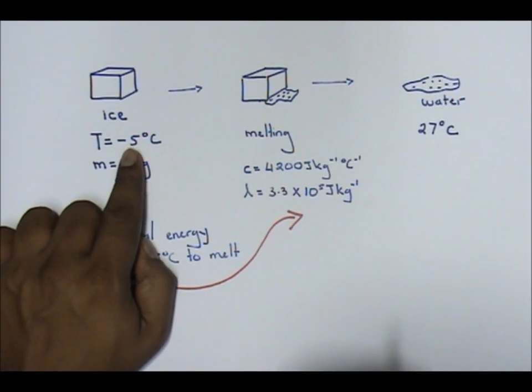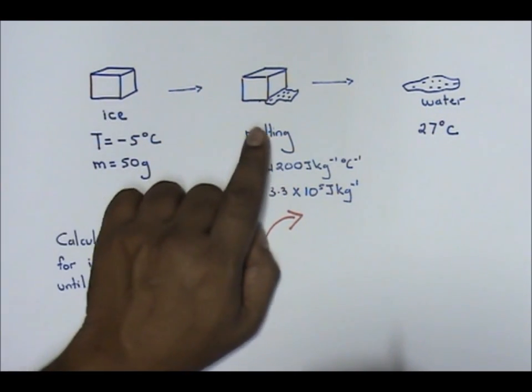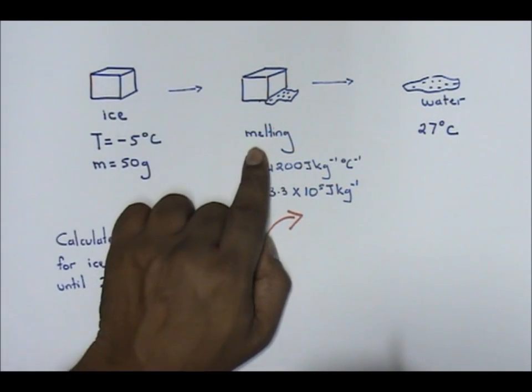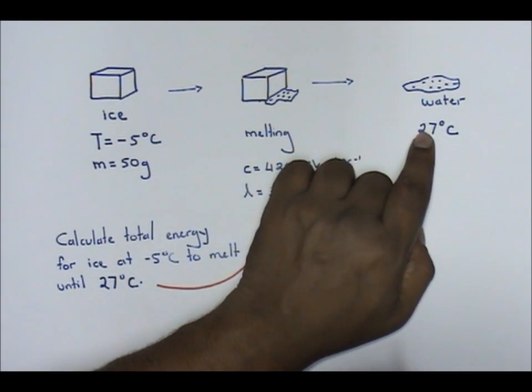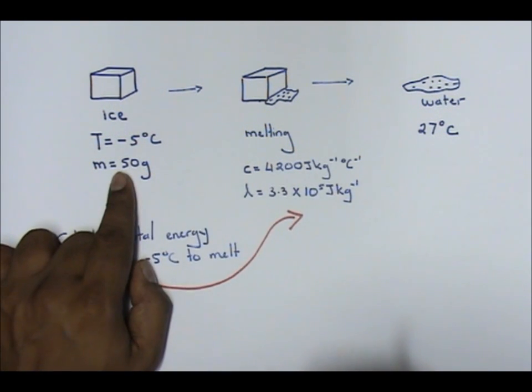Given to you: temperature negative 5 degrees Celsius when it is ice. Water at room temperature 27 degrees Celsius. Mass is given to you, 50 grams. Remember guys, you have to change this to kilograms.